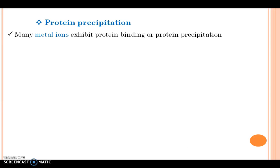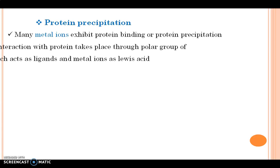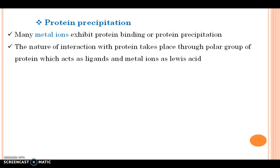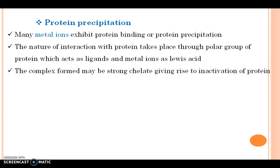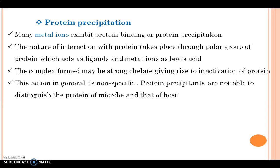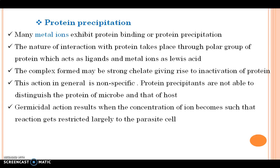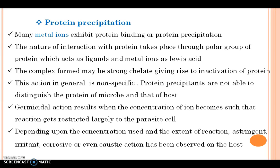Next is protein precipitation. Many metal ions exhibit protein binding or protein precipitation. The nature of interaction with protein takes place through polar groups of the protein which act as a ligand, and metal ions act as Lewis acids. The complex formed may be a strong chelate, giving rise to inactivation of the protein. This action in general is non-specific because the protein precipitants are not able to distinguish the protein of the microorganism from that of the host. Germicidal action results when the concentration is such that reactions are restricted largely to the parasite cell. Depending upon the concentration used and the extent of reaction, it produces different actions like astringent, irritant, corrosive, or even caustic action on the host.